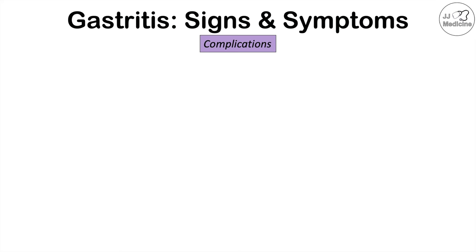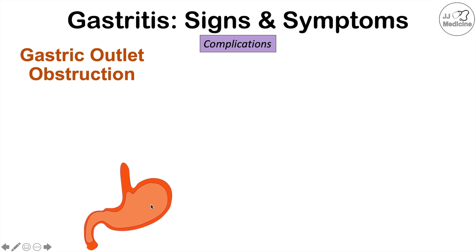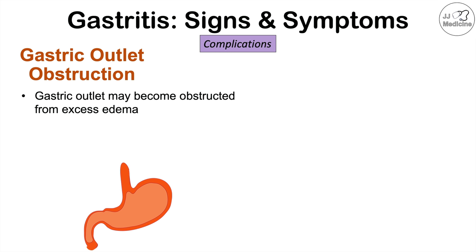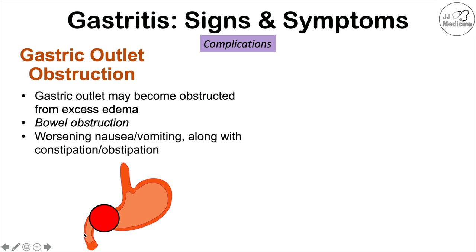There are also important complications that can occur with gastritis, including gastric outlet obstruction. After food has been digested in the stomach, it goes out through the gastric outlet. What can happen is this part of the stomach can be obstructed — there can be a blockage due to excessive edema, or swelling, from the inflammation in the stomach. This can block off the gastric outlet, essentially leading to a bowel obstruction. This can lead to worsening nausea and vomiting, along with constipation and obstipation, where a patient doesn't even pass flatus, in severe cases.